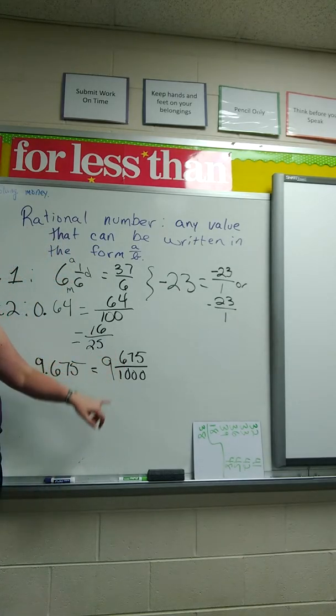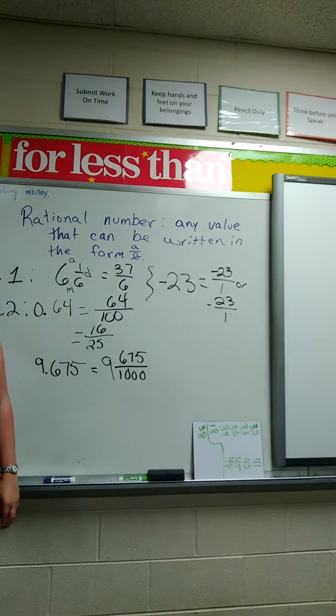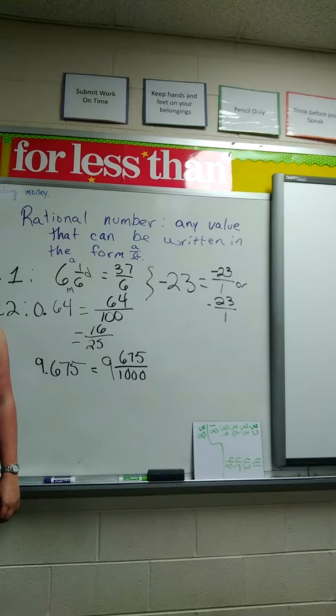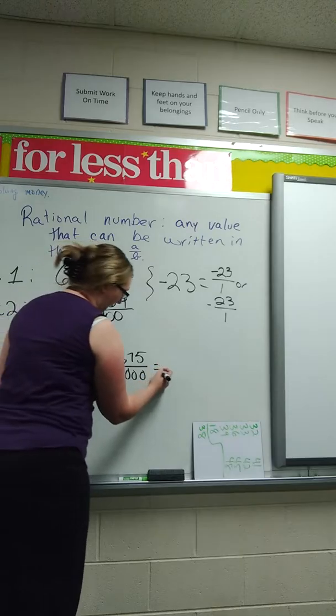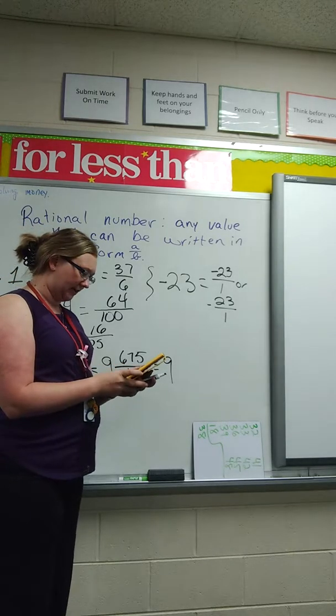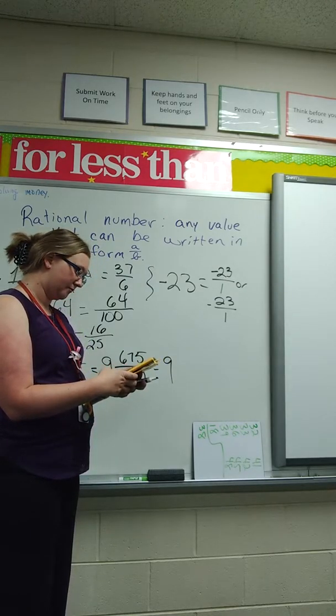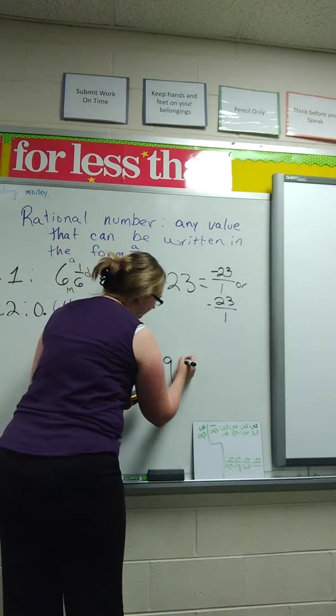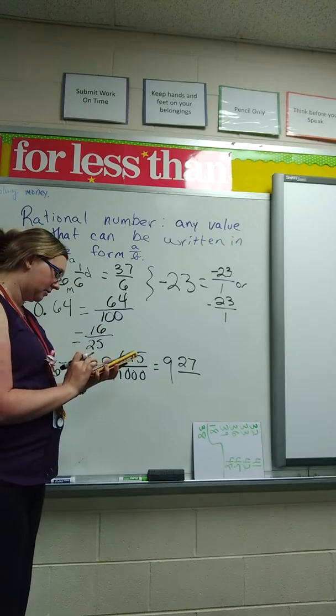Is there anything that I can divide 675 and a thousand by? I couldn't divide by 5, there's something greater. 25. I'm going to use a handy-dandy calculator. 675 divided by 25. That's 27. And 4.